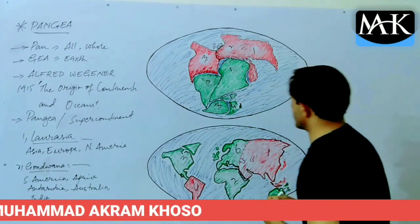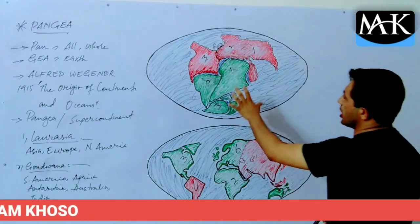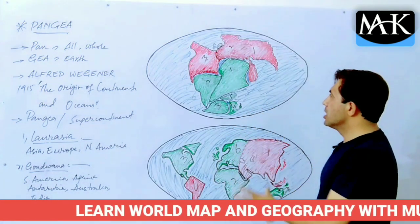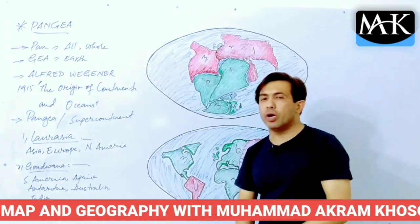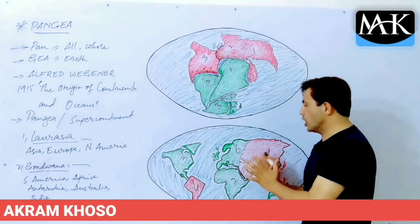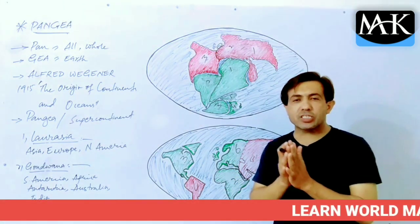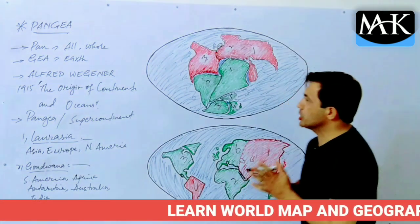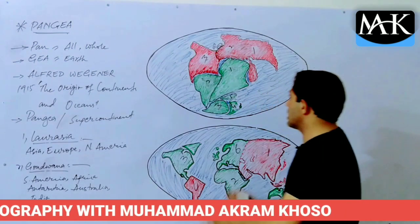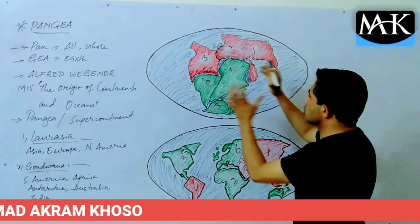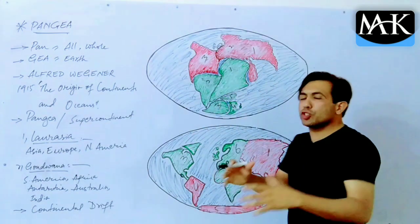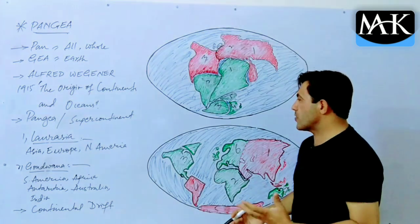So India was originally part of Gondwana — the southern part of Pangea. Almost 200 million years ago, the whole land mass we now know as seven continents was combined in a single land mass known as Pangea, the entire supercontinent.